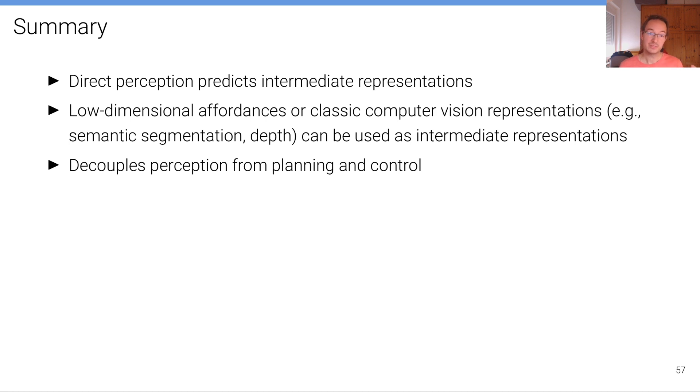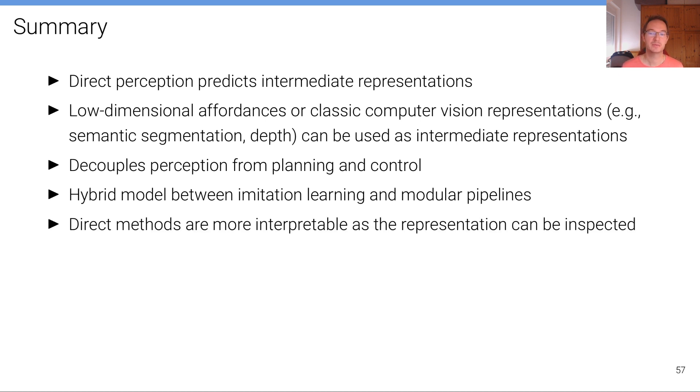These intermediate representations decouple perception from planning and control and therefore often lead to more robust driving behavior and better generalization. And they are a hybrid model between imitation learning and modular pipelines.